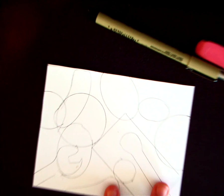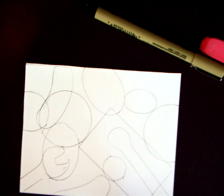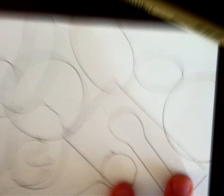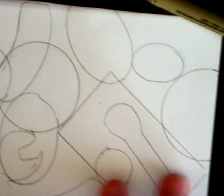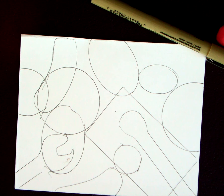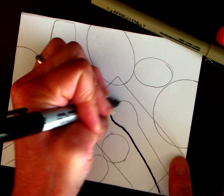Once you have your shapes kind of laid out, then you're going to begin by outlining all of your shapes with your Sharpie. Let me zoom in a little so you guys can see.